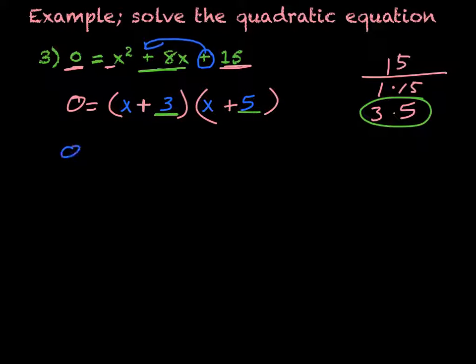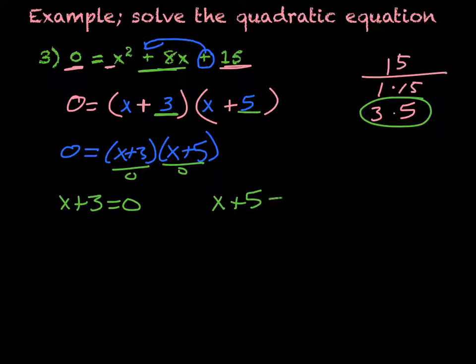So now I'm solving 0 = (x + 3)(x + 5), by setting each of them equal to 0. So I have x + 3 = 0, and x + 5 = 0.